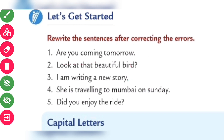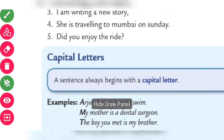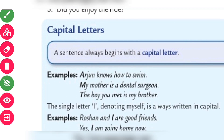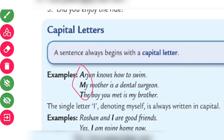Now let us see what are capital letters. A sentence always begins with a capital letter. Like: Arjun knows how to swim. My mother is a dental surgeon. The boy you met is my brother. Here A, M, and T — the very first letters of the words — are given in capital letter. These are capital letters.